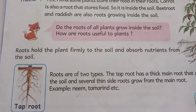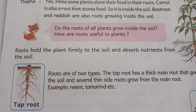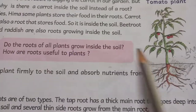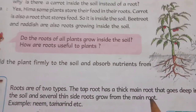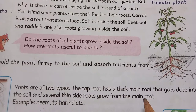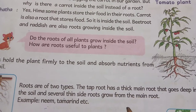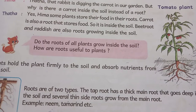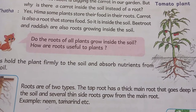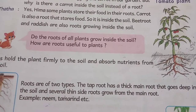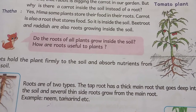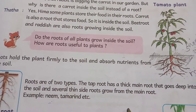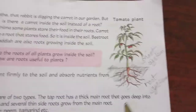Good morning children. In the last class we discussed about plants. Plants are important living things. There are different types of plants around us. Most of the plants around us are green and they bear flowers. Those are parts of a plant.